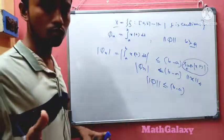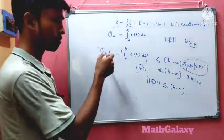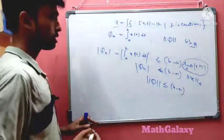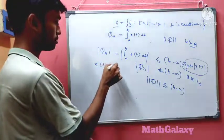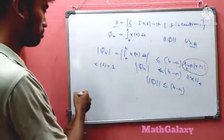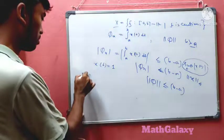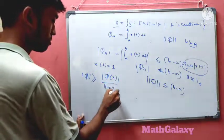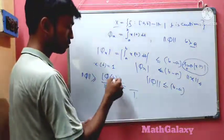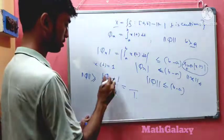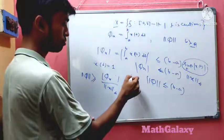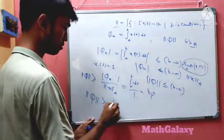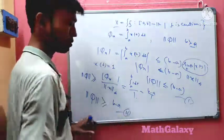To show the norm is exactly b minus a, we need to find a function achieving this bound. We use the constant function x(t) = 1. Then the sup norm of x is 1, and φ(x) equals the integral from a to b of 1 dt, which equals b minus a. Therefore ||φ|| ≥ |φ(x)| / ||x||_sup = (b - a) / 1 = b - a.